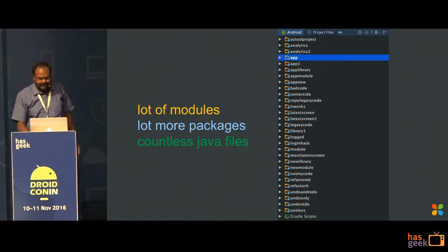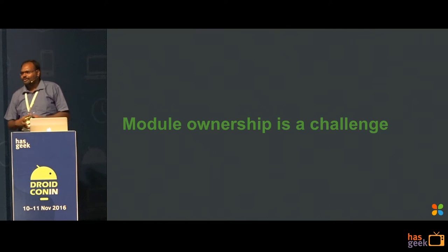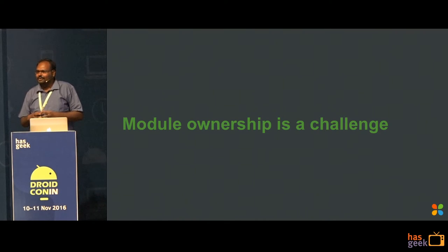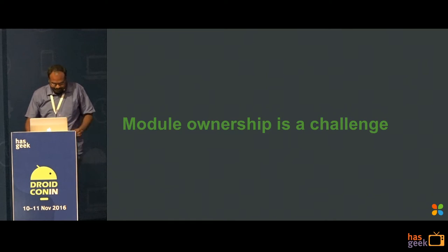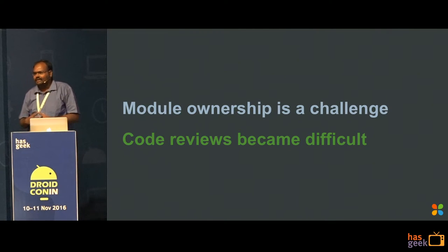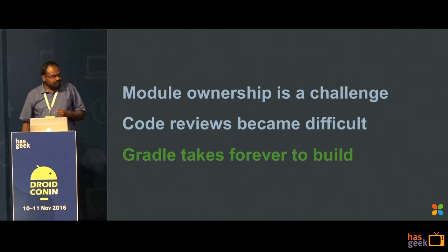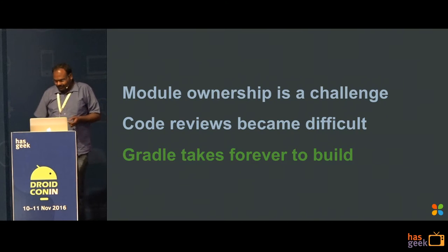What happens in this code is module ownership becomes a challenge. It's like nobody knows who owns which part of the code. Please don't tell me that in your team everybody knows their ownership boundary — at least your managers don't want you to know that boundary. And code reuse becomes difficult because there are so many things in one project that if you have to make some changes and see whether your architecture and design are still intact, it becomes difficult.